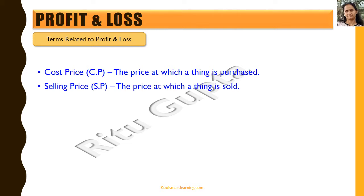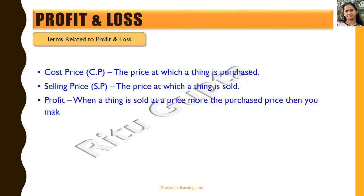Selling price is the price at which a particular thing is sold. So supposing we are talking about a shopkeeper, the cost price would be the price at which the shopkeeper buys or purchases a particular item, and the selling price would be the price at which he sells it.